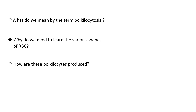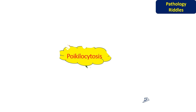How are these poikilocytes produced? They are either produced due to disordered erythropoiesis, or damage to the RBCs after they are produced. In order to simplify these poikilocytes, we will explain them using a mind map.